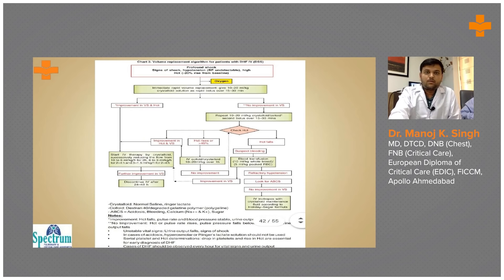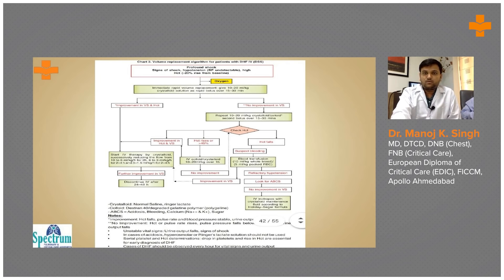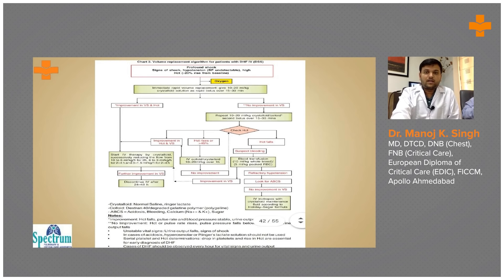For profound shock, we must manage oxygen and other parameters. We perform immediate rapid volume transfusion at 10 to 20 ml per kg, then reassess for improvement in hematocrit, pulse, hemodynamic stability, and urine output. If there is no improvement, we proceed to blood transfusion. If still no improvement, vasopressors can be used, and we assess for acidosis, calcium, and other electrolyte imbalances to correct them.